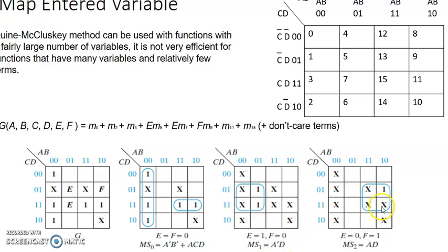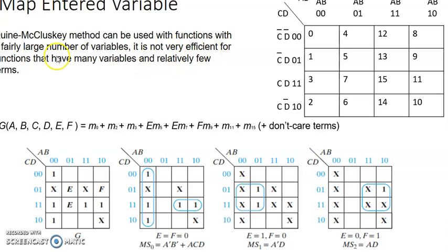Combining all terms: grouping main minterms gives ā·b̄ + a·c·d; grouping with e gives ā·d; grouping with f gives a·d. Now we combine all four terms together for the final solution. This is much simpler compared to Quine-McCluskey, which would require many comparisons, pairings, prime implicant charts, and covering all minterms.